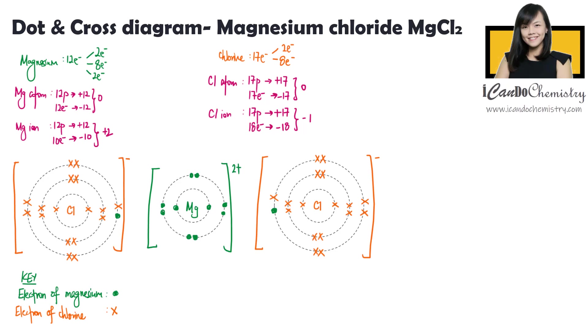Sometimes in examinations, they will ask you to draw only the outermost electrons. In this case, you omit the inner shells, and this is what you should draw.